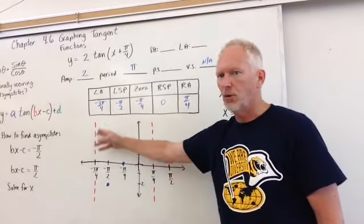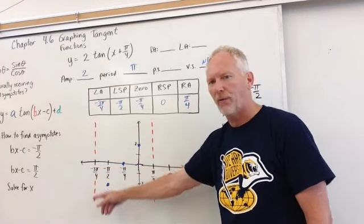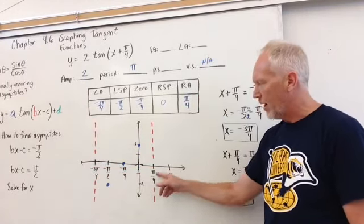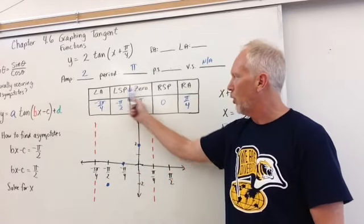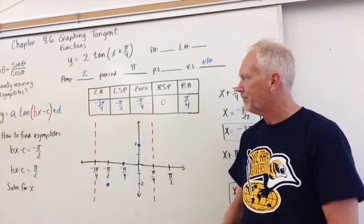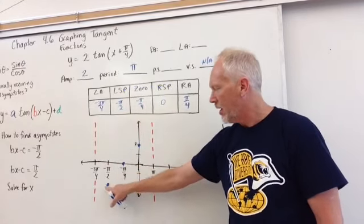All right. So I've listed the two asymptotes, the left side at negative 3 pi over 4 and the right side at pi over 4. So now what we have to do is drop in those shoulder points left and right. We have a left shoulder point at negative pi over 2.